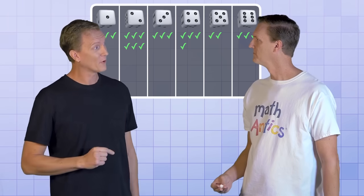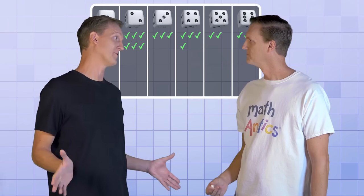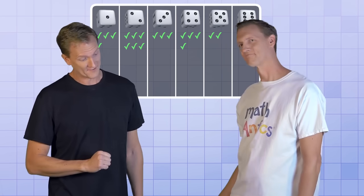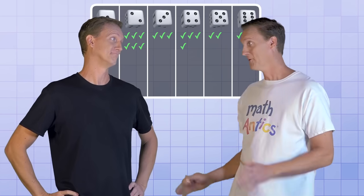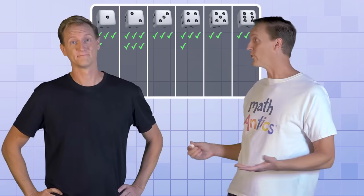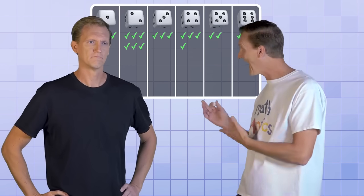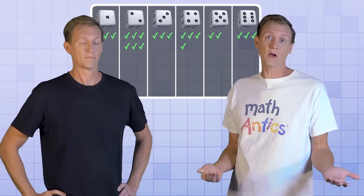A-ha! You said that each number was going to come up just as often as the other numbers. But look! There's more 2's than there are 5's. How do you explain that?